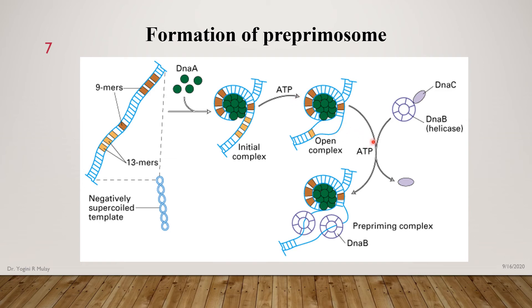The helicase enzyme — that is, the DNA B protein — comes into the picture. But DNA B protein cannot bind to this unwinding region on its own. Therefore, DNA C protein helps the DNA B protein. DNA C protein binds to DNA B protein and both come to the unwinding site. DNA C protein only helps DNA B to bind at the unwinding site. Once the DNA B protein is bound to the unwinding DNA, DNA C protein leaves the complex. This is known as the pre-priming complex.